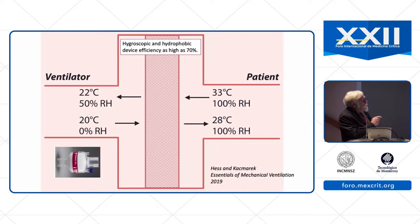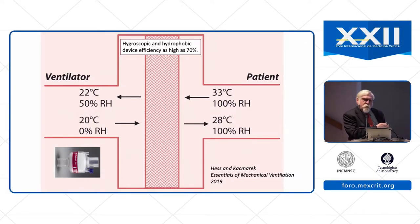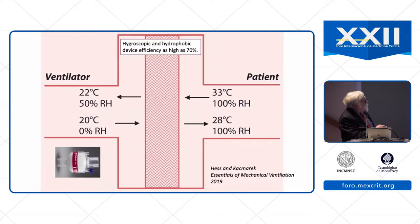Another way to warm and humidify the inspired gas is by using a passive humidifier, sometimes called a heat and moisture exchanger or an artificial nose. These devices contain a hygroscopic or hygrophobic material so that when the patient exhales through this material, much of the heat and humidity from the patient is trapped in the device, and that is delivered back to the patient on the subsequent inhalation. The device is placed between the ventilator circuit and the patient — the patient exhales through it, trapping heat and humidity, which then gets delivered back to the patient.